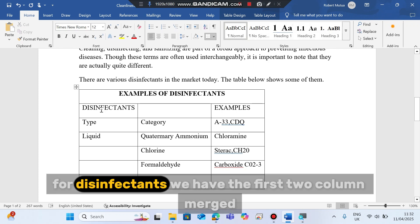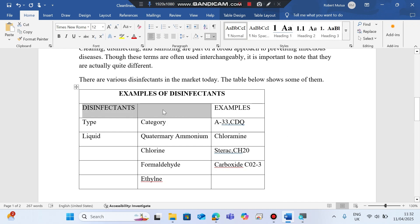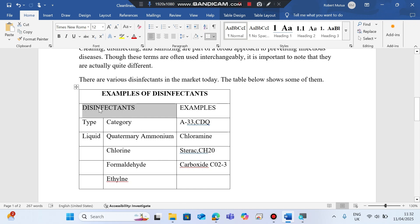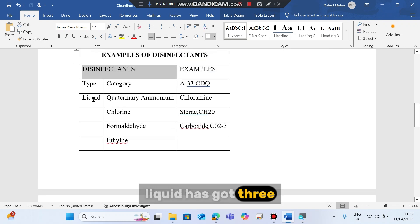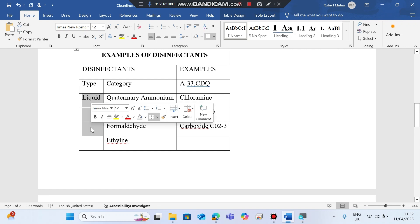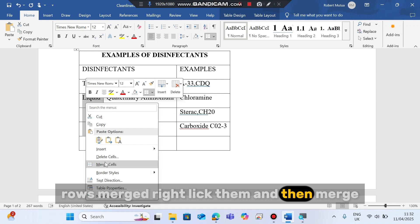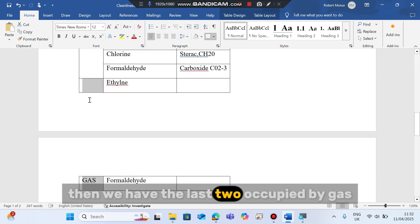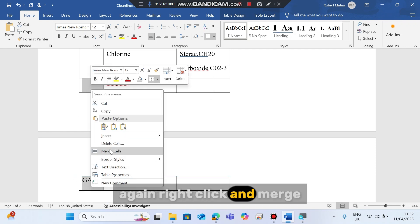For disinfectants we have the first two columns merged, so we select them, then you can right click and you'll see merge cells. Then another merge column is liquid. Liquid has got three rows merged. Right click them and then merge. Then we have the last two occupied by gas. Again, right click and merge.